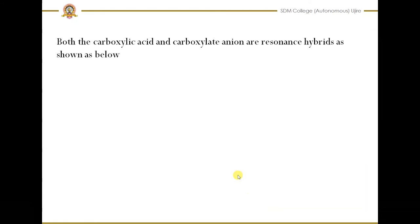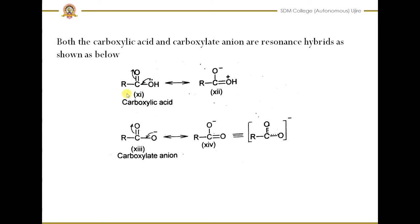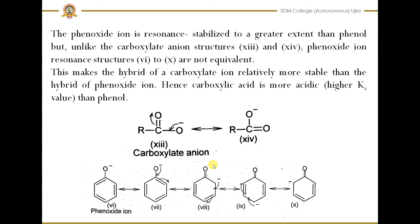We can write the resonance structures for carboxylic acid: the OH group's lone pair shifts to form a pi bond, giving a positive charge on one oxygen and a negative charge on the other. Similarly, for the carboxylate anion, we can write resonance structures 13 and 14, and these two are equivalent. We can also write the resonance hybrid structure. The phenoxide ion is resonantly stabilized to a greater extent than phenol itself.